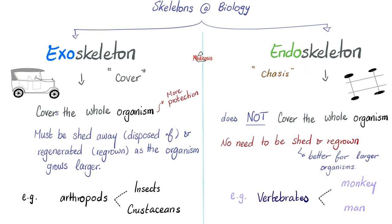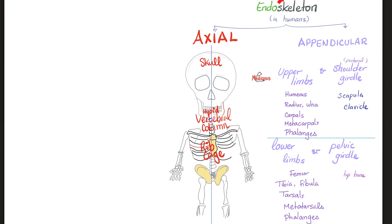That's why thankfully you have an endoskeleton — it's on the inside, does not cover the whole organism, and therefore there is no need to shed it away as you grow. The human endoskeleton has the axial skeleton in the midline and the appendicular skeleton away from the midline. The axial skeleton from head to toe includes the skull, then the hyoid bone in the floor of your mouth or top of your neck, then the vertebral column or backbone, and the rib cage which has the sternum and ribs — but not the scapulae, as those are part of the appendicular skeleton.